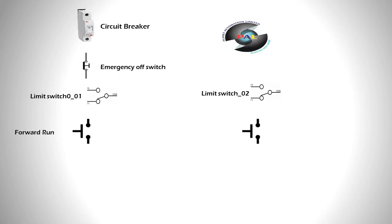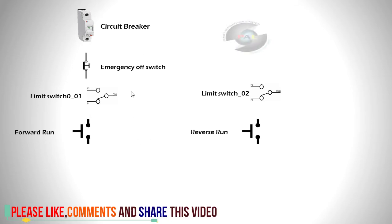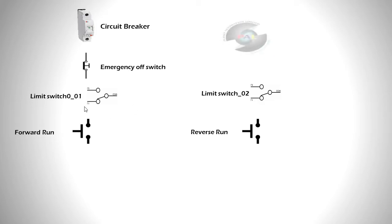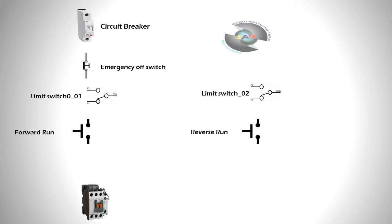Forward run and this is the reverse run switch or push button switch. This is the emergency stop button where you want to stop your whole operation. The limit switch is a very small device in any kind of panel. This is limit switch 1 and this is limit switch 2 — limit switch 1 works for the forward run and limit switch 2 works for the reverse run.